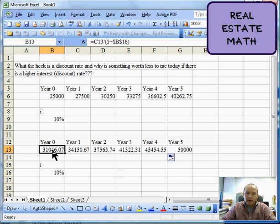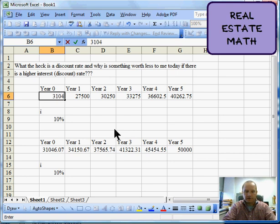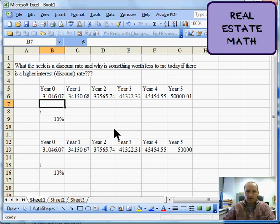So if I were to put $31,046.07 and invest that at year zero, what do you think it would be worth in year five? Well, let's see. Let's put $31,046.07. Oh, voila, that $31,000 grows to $50,000.